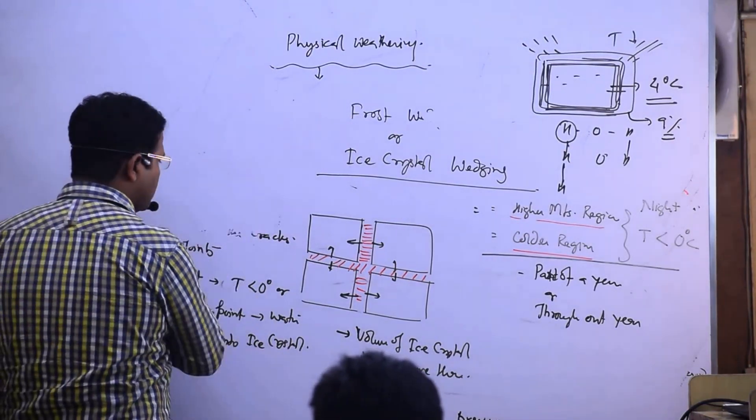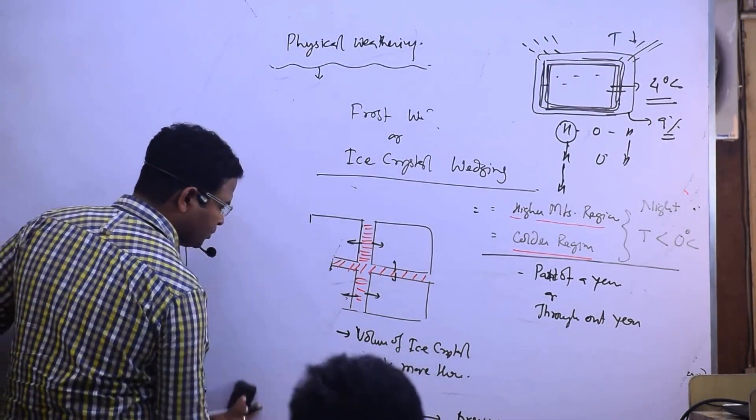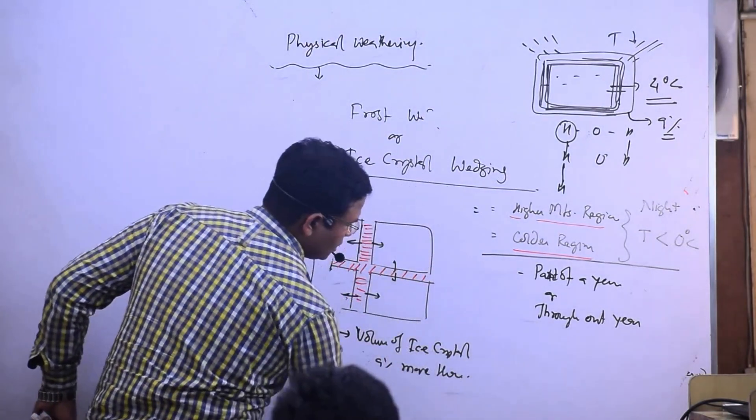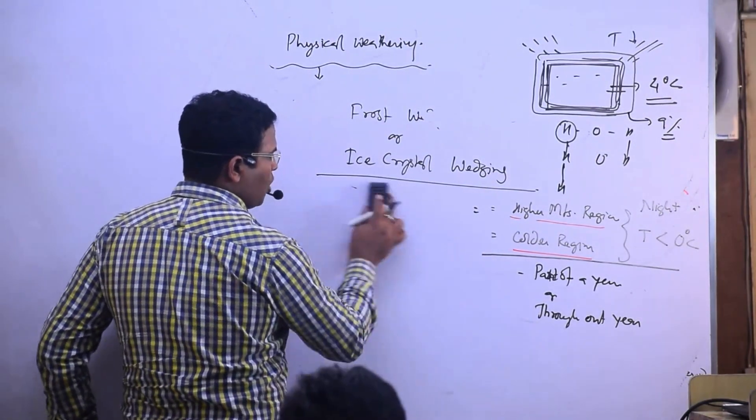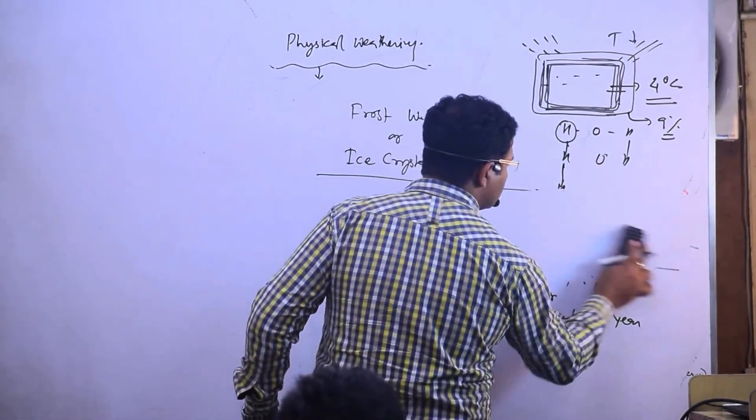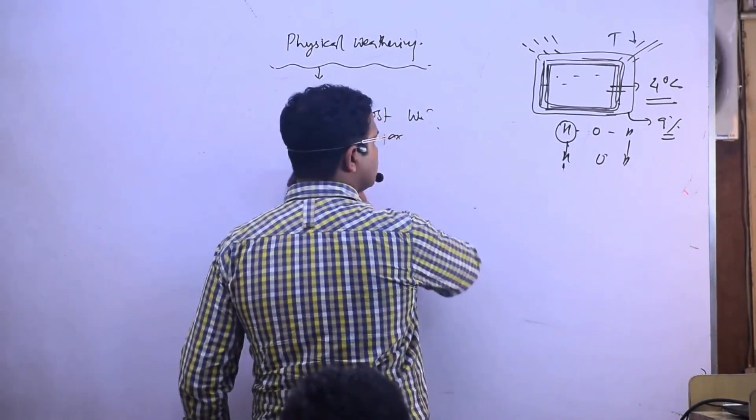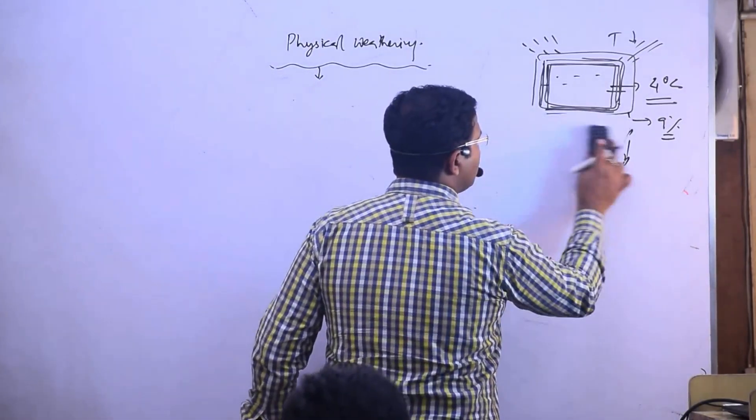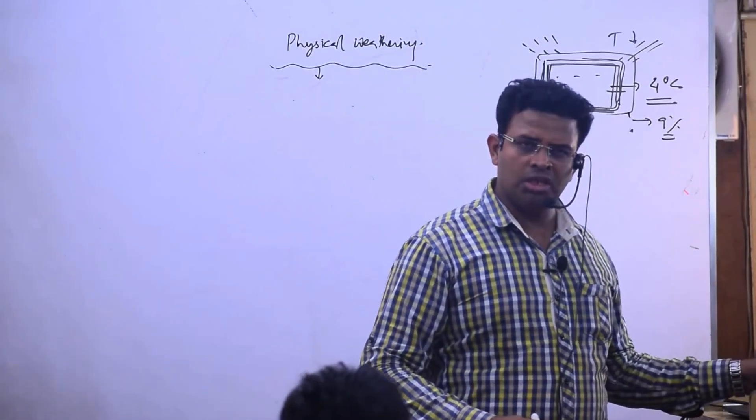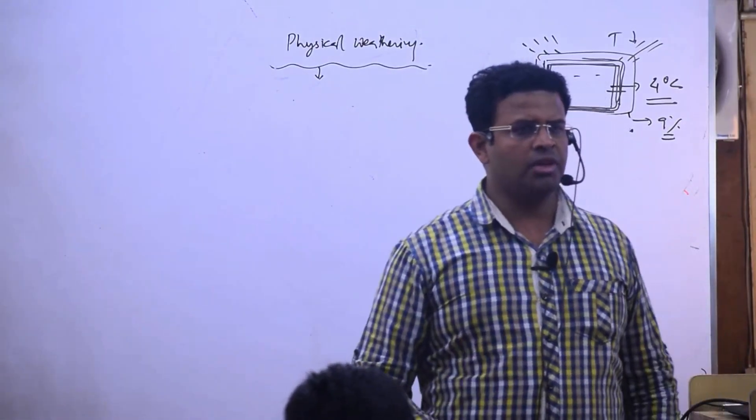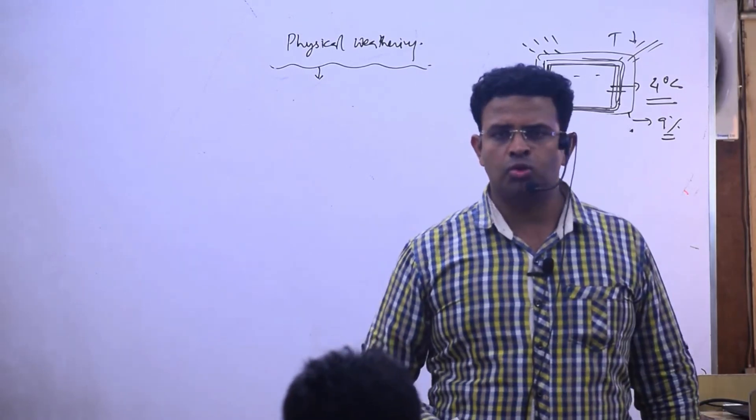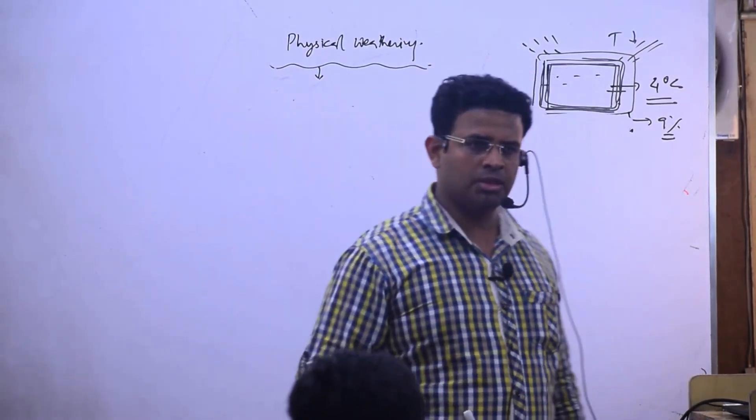So which are the physical weathering types we have seen? First is block disintegration and granular disintegration. Next one we have seen is exfoliation. Thereafter we have seen frost weathering. Understood? Physical weathering.